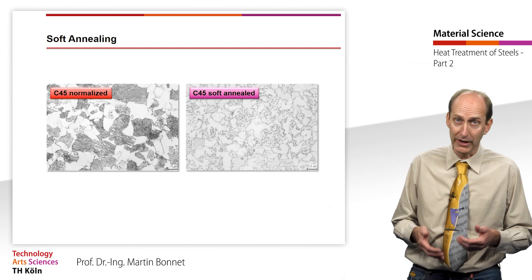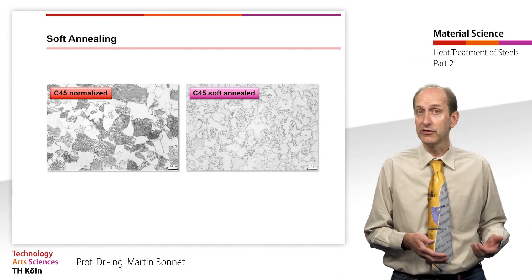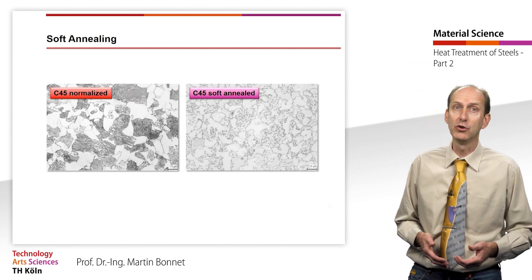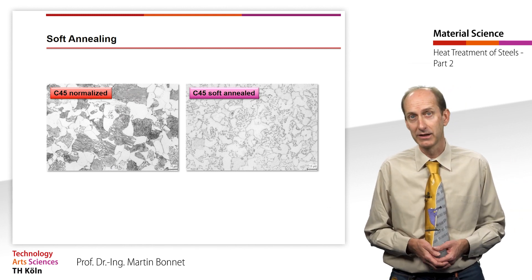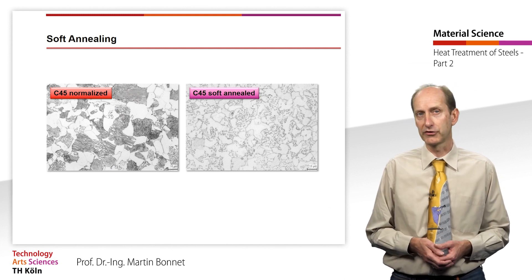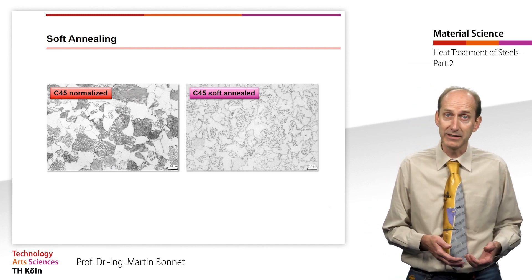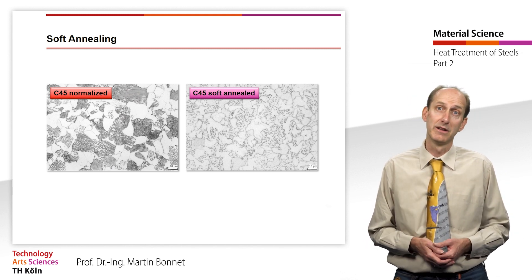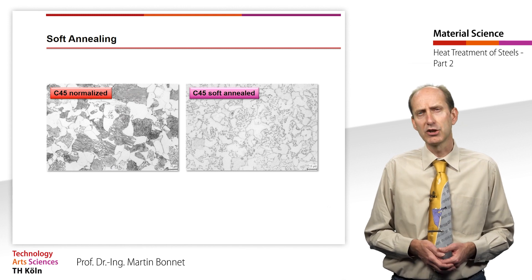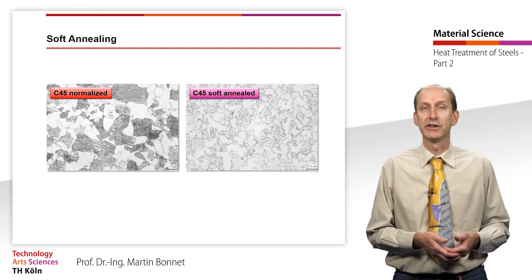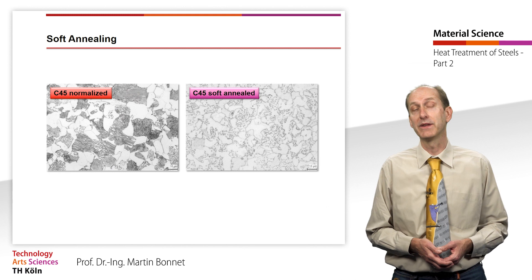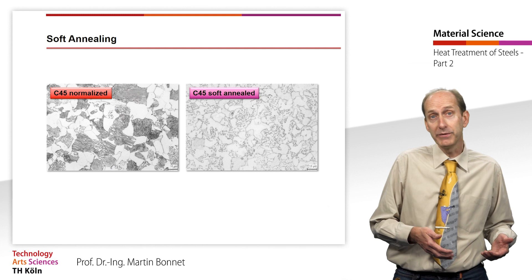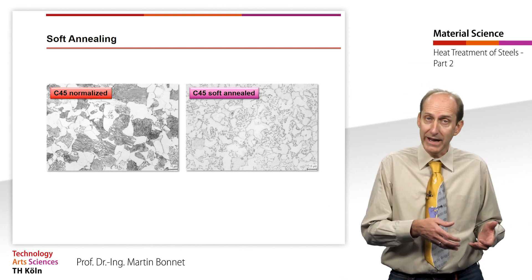Both metallographic images show the tempered steel C45. In the left image, it is shown in the normalized state, resulting in a ferritic-perlitic microstructure. The cementite is present in lamella form in the perlite embedded in ferrite. The right picture shows the same steel after a 24-hour soft annealing at 720 degrees Celsius.